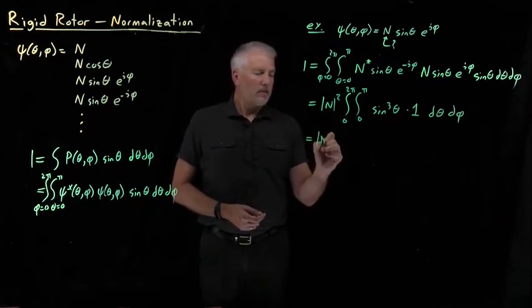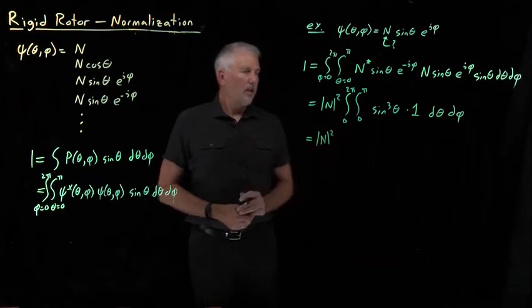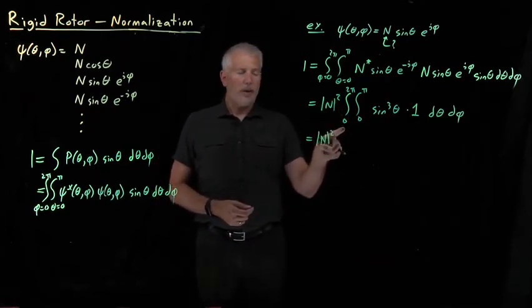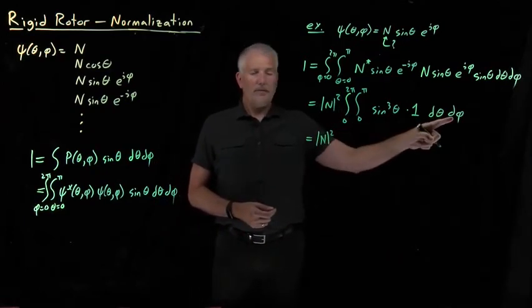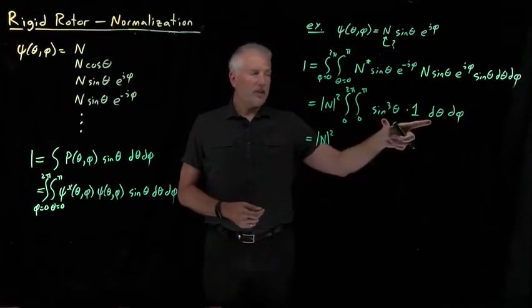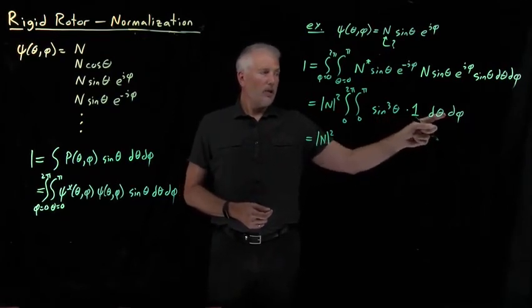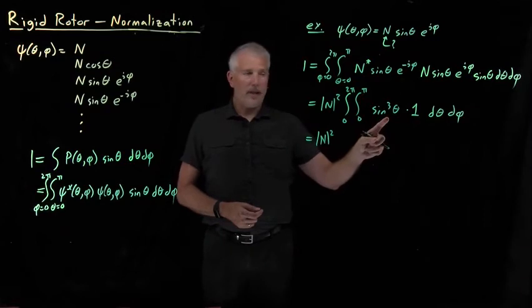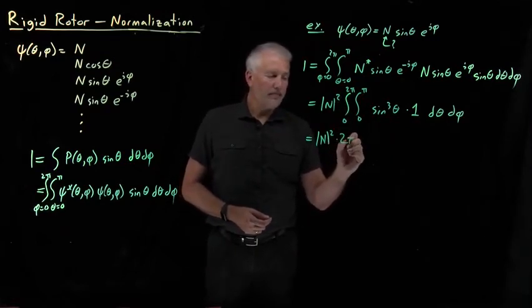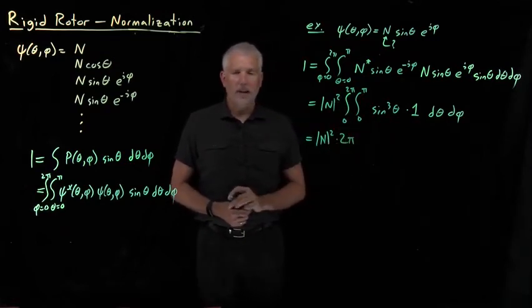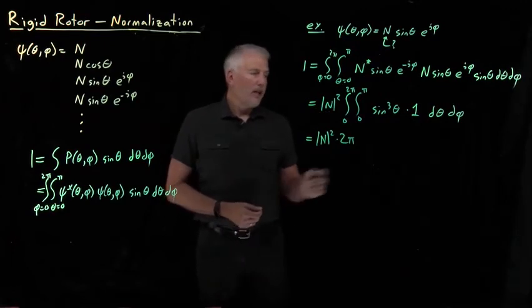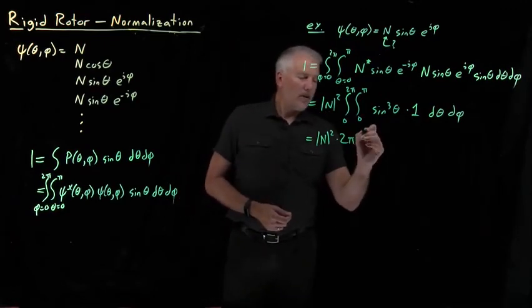The integral is looking much simpler. I've got n-squared, and the phi integral — the outer integral from 0 to 2 pi of d-phi — has no phis in the integrand, so it's straightforward. The integral of d-phi is just phi, evaluated from 0 to 2 pi, which gives 2 pi. So the phi integral is done and equals 2 pi.